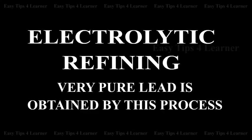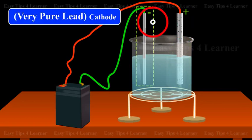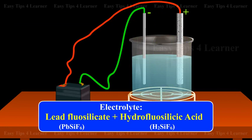Electrolytic Refining. Very pure lead is obtained by this process. The anode is impure lead, and the cathode is very pure lead. The electrolyte is lead fluorosilicate (PbSiF₆) plus hydrofluosilicic acid (H₂SiF₆).